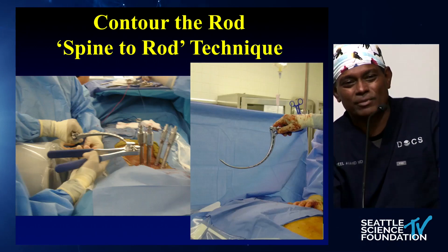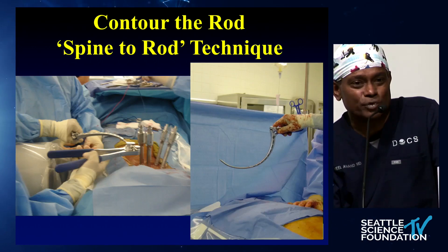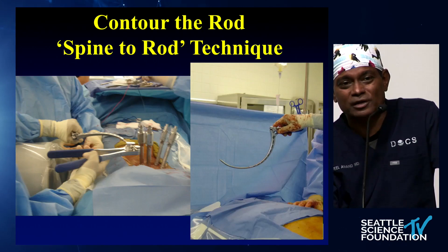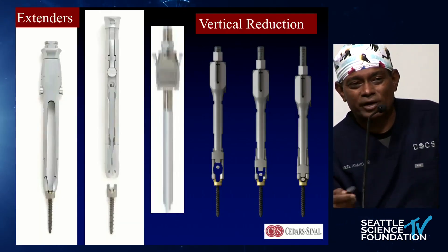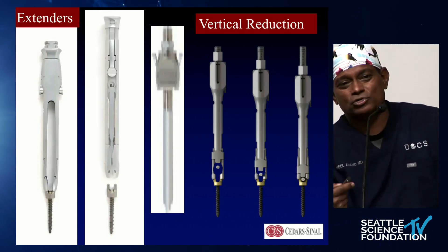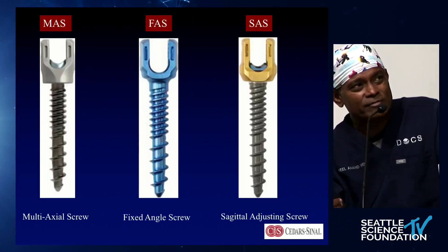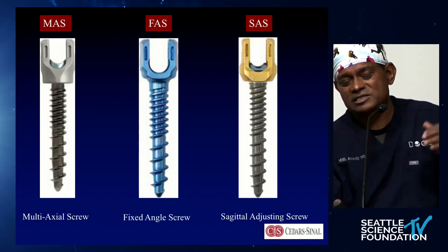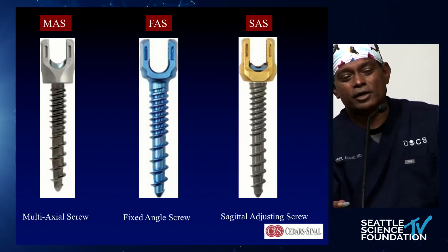Contouring the rod is the key in any MIS technique. You're pulling the spine to the rod, and it will come wherever you put it. So it becomes critical that you control the rod right — to rotate, translate, and realign that fractured spine. That's an important tool. Reduction towers become very useful; everyone has them. You can achieve great magnitudes of reduction with these towers done percutaneously. You have different screw options: a fixed angle screw on either side of a fracture gives you great control; a sagittally angled screw one level removed gives you time for contouring.